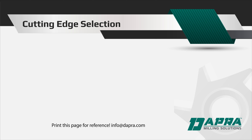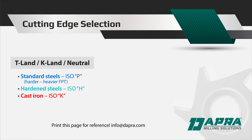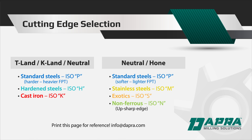Here is a quick summary page for future use — we'll include a link below so that you can print this page for reference. Use the stronger edges for the stronger materials, use the sharper edges for the softer materials, or where the high shear cutting edge is necessary for reducing heat or tool pressure.